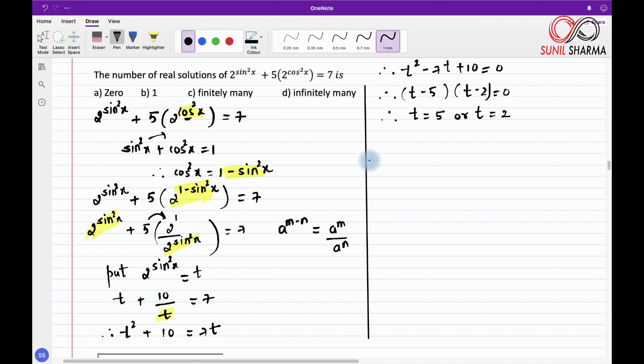Now let us resubstitute our value. Our value for t was 2^(sin²x). So it was 2^(sin²x) = 5 or 2^(sin²x) = 2. What you need to observe here is since LHS is equal to RHS, now if you see LHS we have 2 raised to something but here RHS is 5. Well, 2 cannot be converted into 5 whatever power it may take. So immediately we can discard this one.